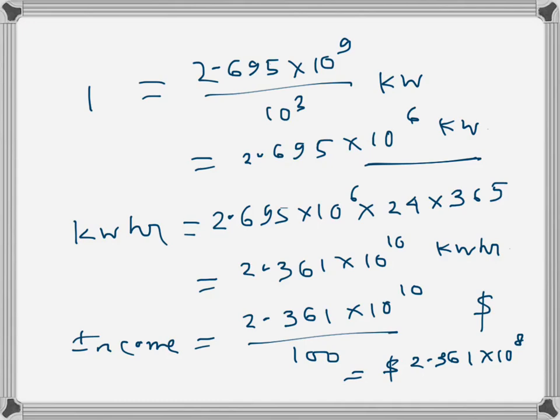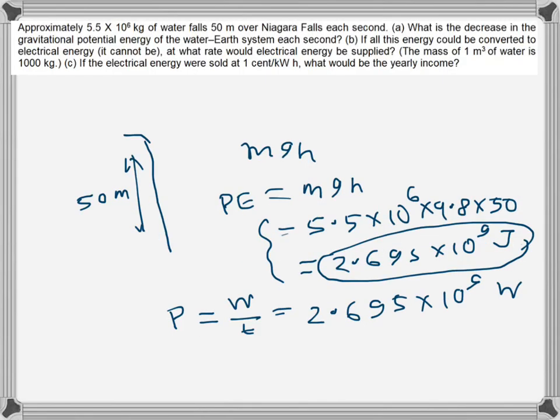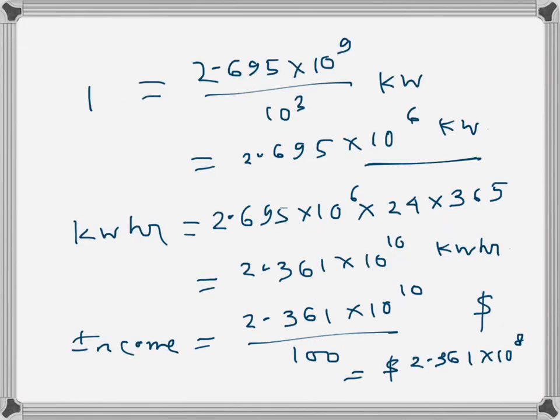We just multiplied by the number of hours. If it were in a day, we would multiply by 24 because there are 24 hours in a day. If it were one month, it would be 24 times 30 for 30 days. But it's one year, so we multiplied by 365.